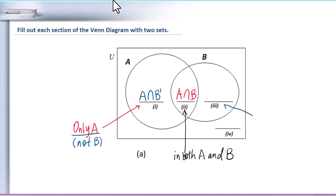Section 3 means only B. When you say 'only,' it implies not A. So B intersection A' is the set for section 3.